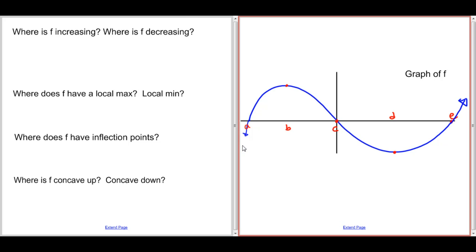f prime is positive from x equals negative infinity, because it keeps on going in the downward direction, so the slope here is positive up until b. Let's write that down. f is increasing on the interval from negative infinity to b.